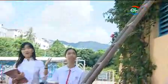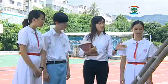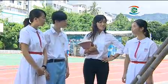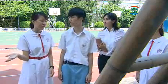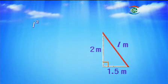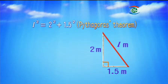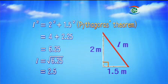Here is a ladder leaning against the wall. The top of the ladder is 2 meters above the ground, and the foot of the ladder is 1.5 meters away from the wall. What is the length of the ladder? Let L meters be the length of the ladder. L² = 2² + 1.5² = 4 + 2.25 = 6.25. L equals the square root of 6.25, so L equals 2.5. Therefore, the length of the ladder is 2.5 meters.